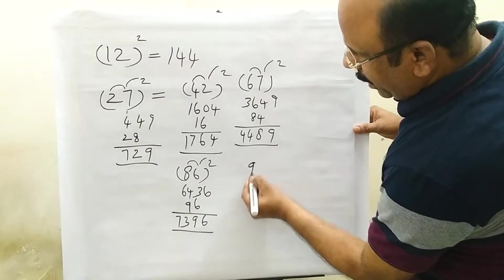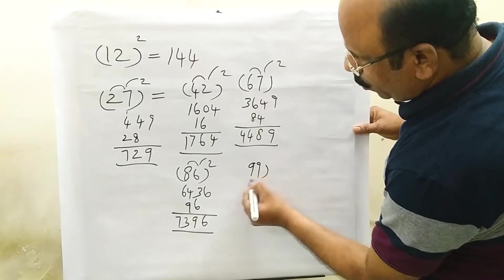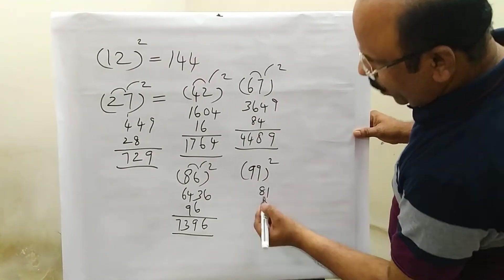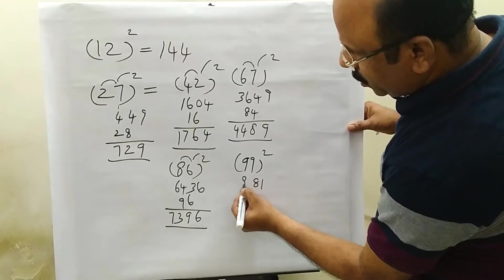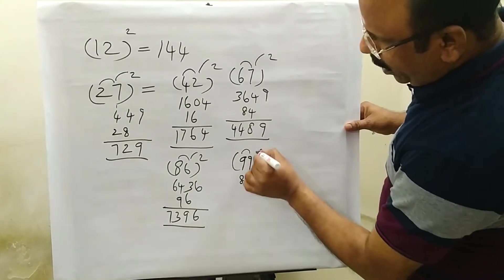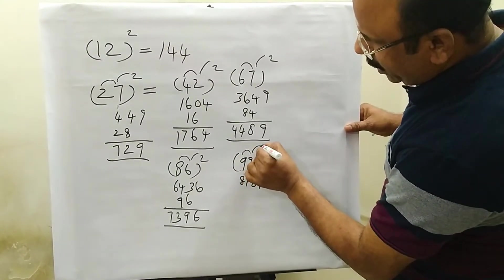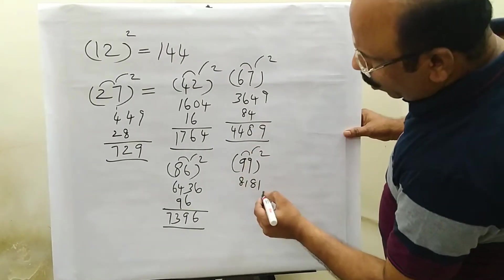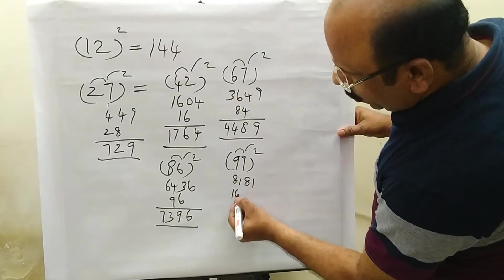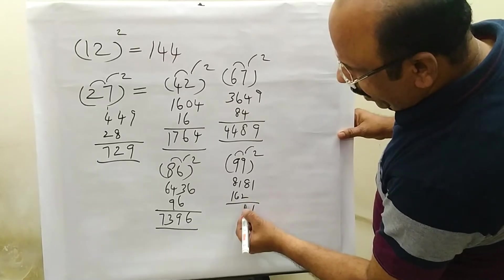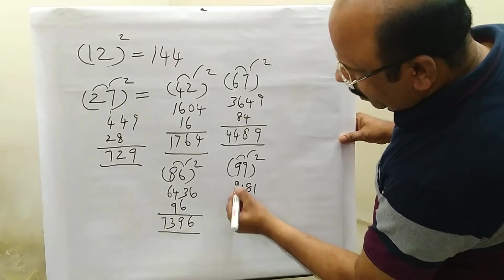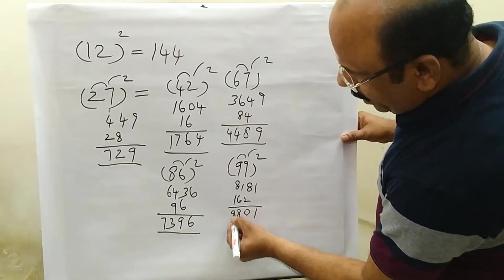Now we go to 99 squared. 9, 9 gives 81. 81 into 2 is 162. One digit tally — 162. Then 1; 8 plus 2 is 10, carry 1 remaining. 2 plus 6 is 8; 8 plus 1 is 9. Answer is 9801.